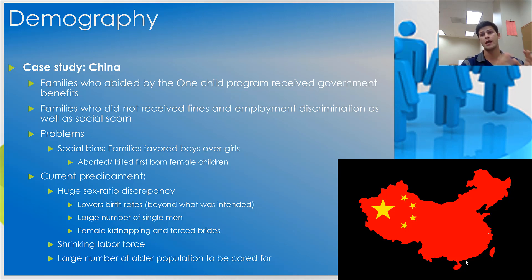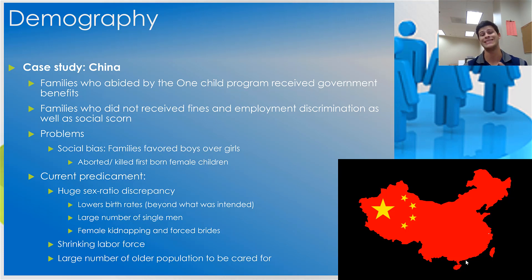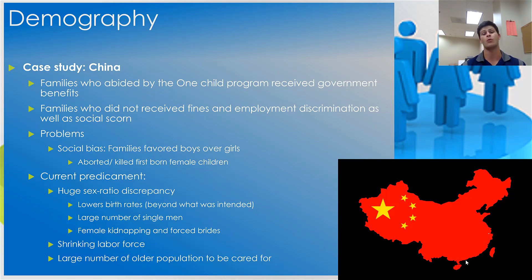In theory this should have worked — one child per household would dampen population growth and eventually the death rate would exceed the birth rate. However, there was a huge problem China didn't consider: a social bias favoring sons over daughters. As a result, many families would abort or kill female first children, which highly slanted the sex ratio in favor of boys. Far more men were being born than women because women were selected against under the one-child policy.